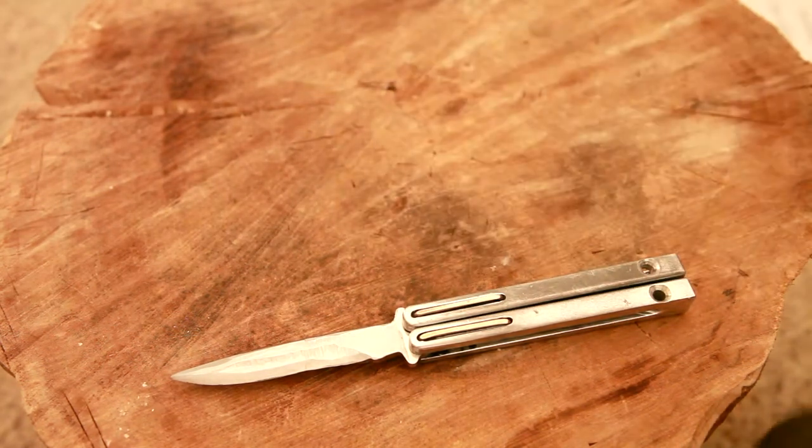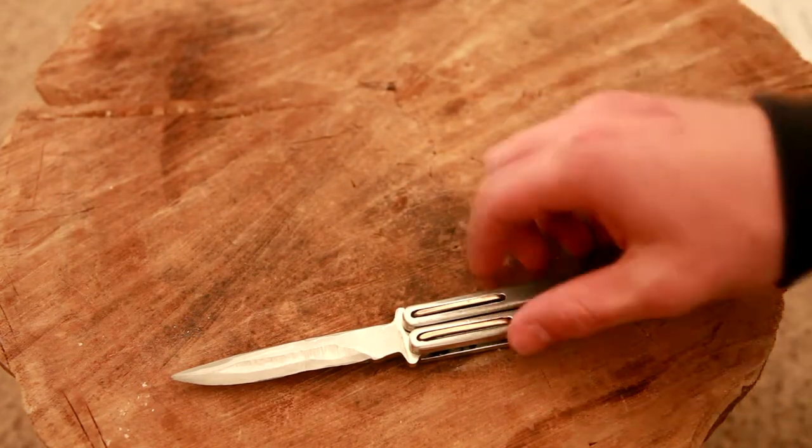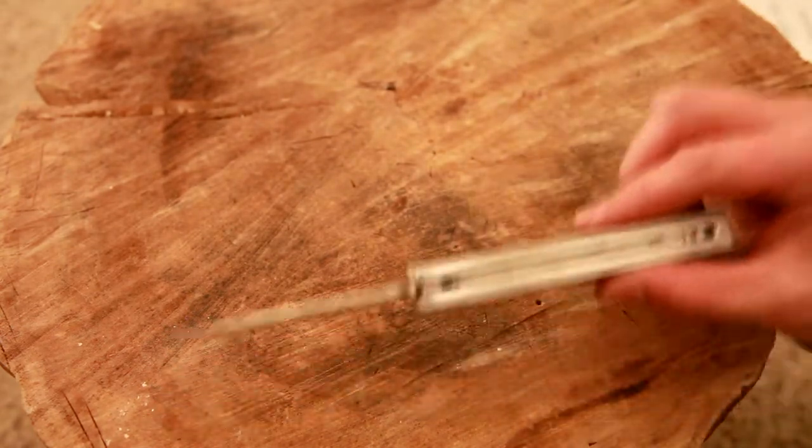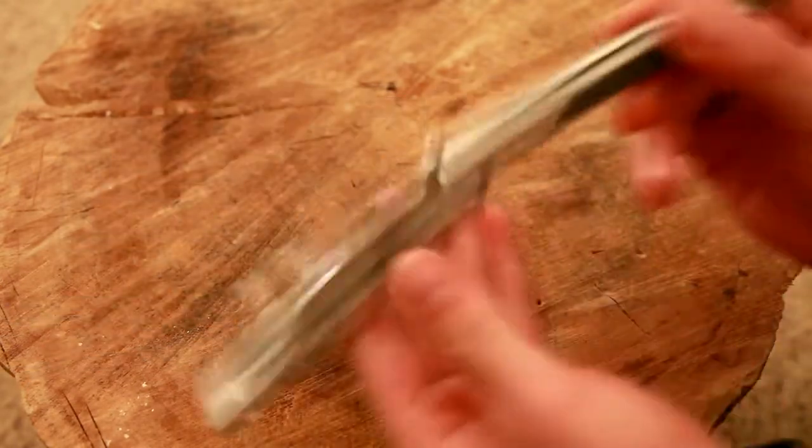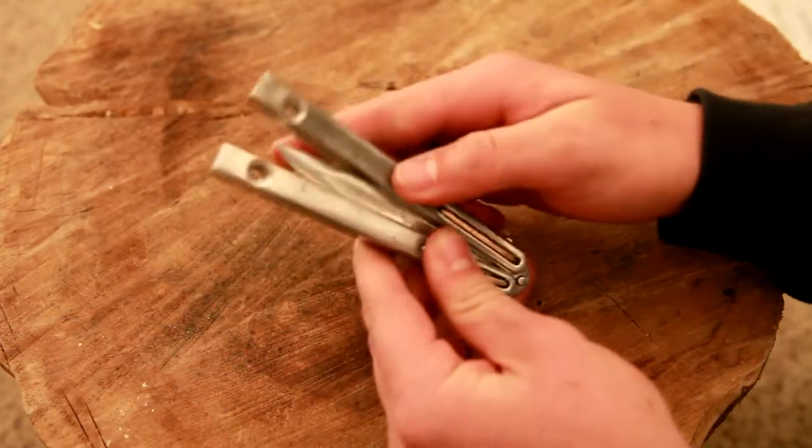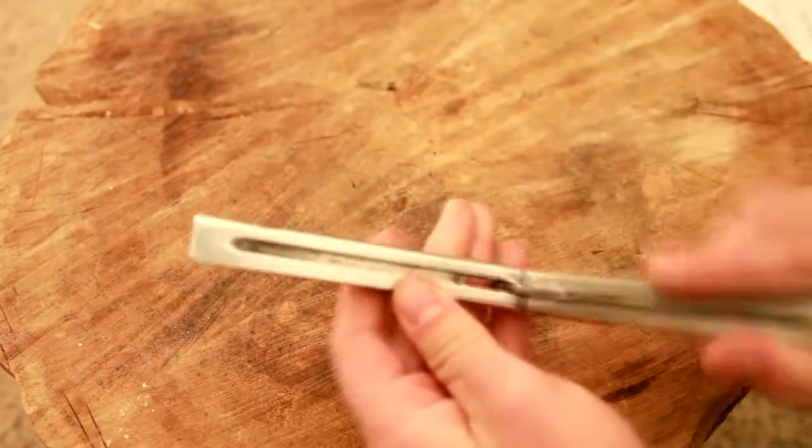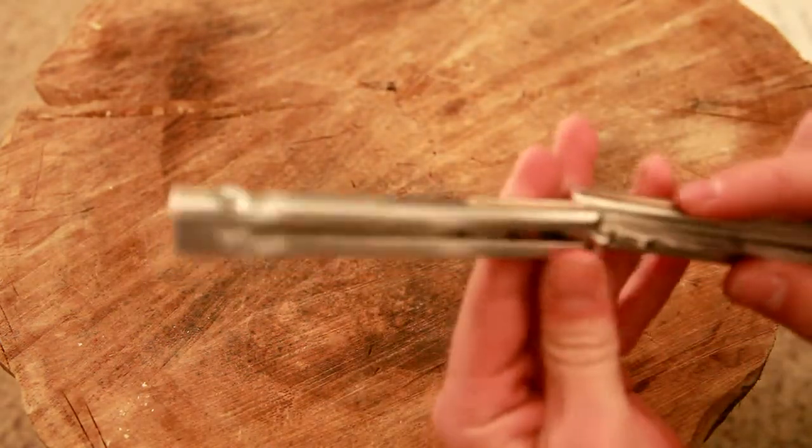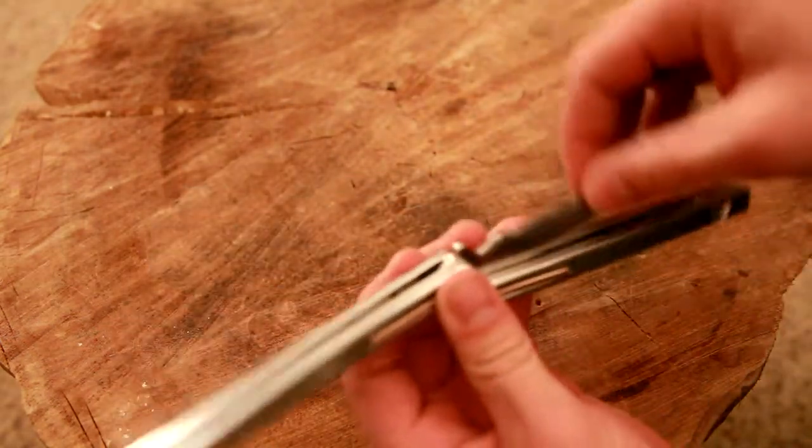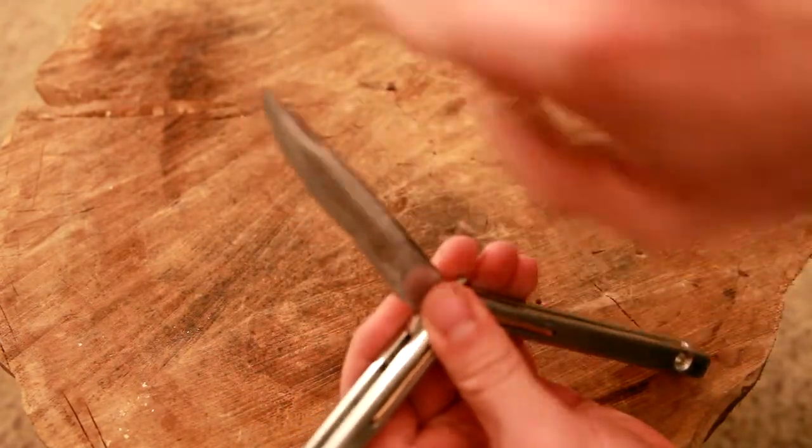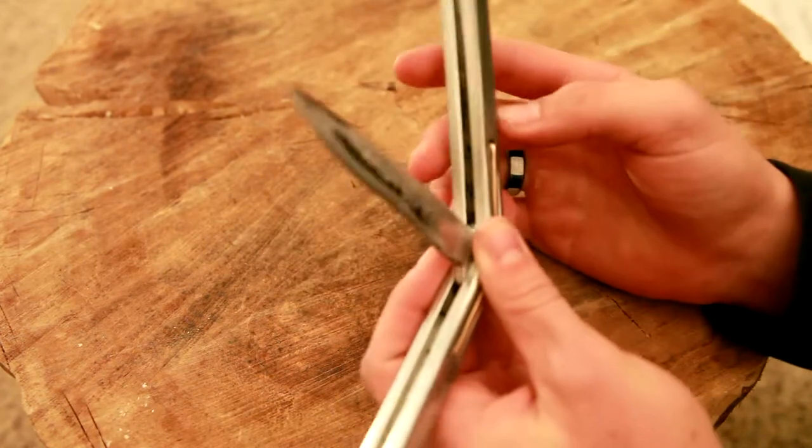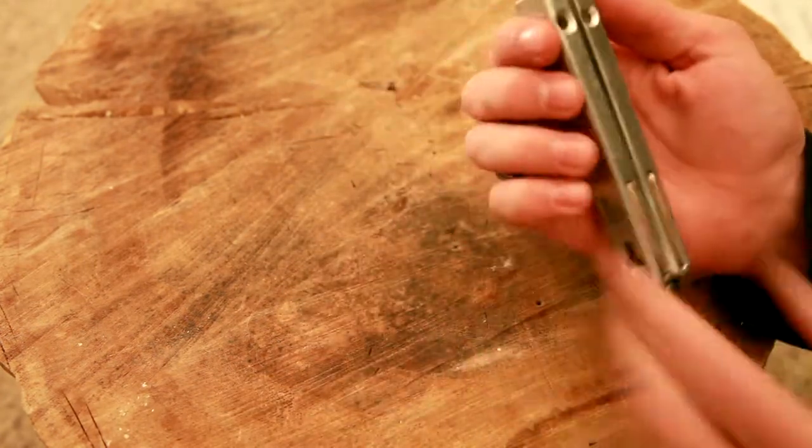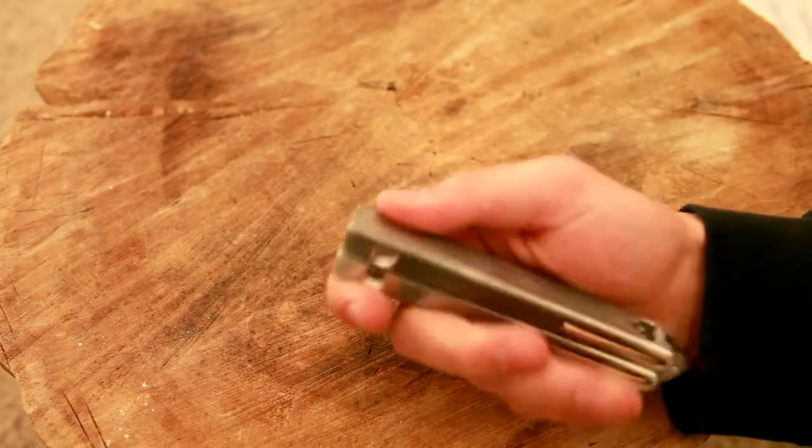So I pulled the blade out and I wrote the G codes for the handles, which was designed to perfectly encapsulate the blade. See, right here it matches the curve, and then right here it's got the subtle slope going up.